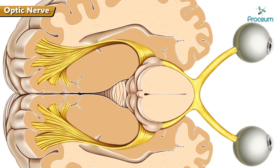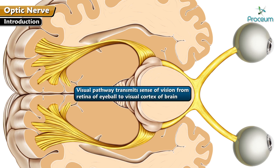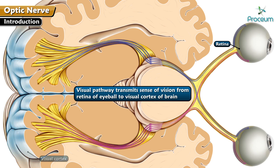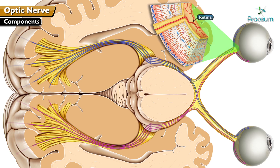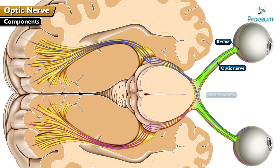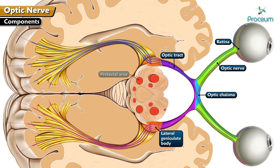Welcome to another video in anatomy. In this section, we're going to discuss the second cranial nerve, the optic nerve. Vision is an important special sense in humans. The visual pathway transmits the sense of vision from the retina of the eyeball to the visual cortex of the brain. The components of the visual pathway include the retina, optic nerve, optic chiasma, optic tract, lateral geniculate body, pre-tectal area, and superior colliculi.